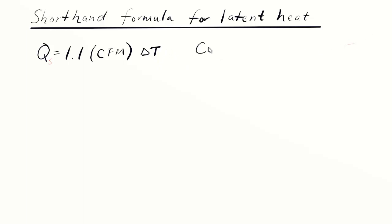What we want to do in this video is figure out an analogous latent load formula, which has some constant multiplied by CFM of air, because that's what airflow is typically measured and designed for in the United States, multiplied by some change in absolute humidity ratio.